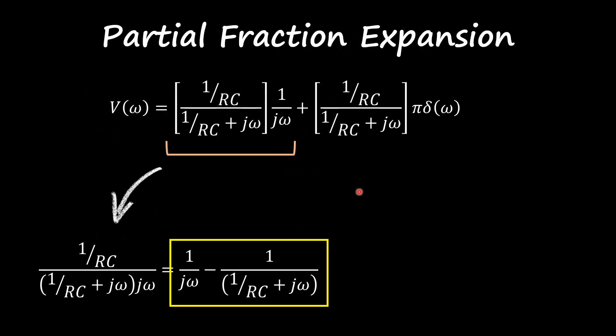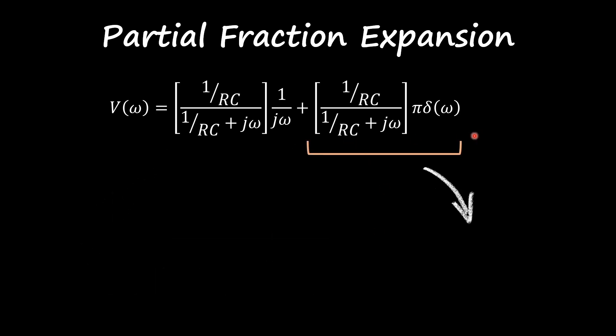So for that first part of the equation I got this partial fraction expansion. Now for the second part, if I multiply this part of the equation with that, I get the following answer. Now I get pi times this function.